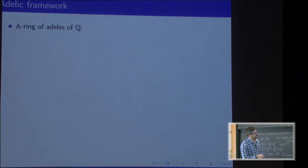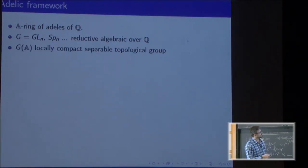A is the ring of adeles, G is some reductive algebraic group—it can be GL(n) or something—and we can take points of G in A. If you don't know what A is, what matters is that this is still a locally compact separable topological group, so we can do analysis on it.